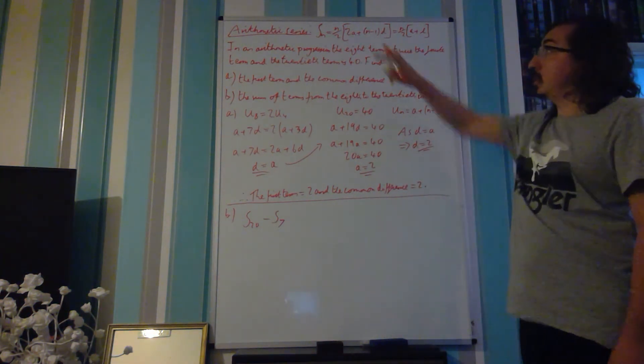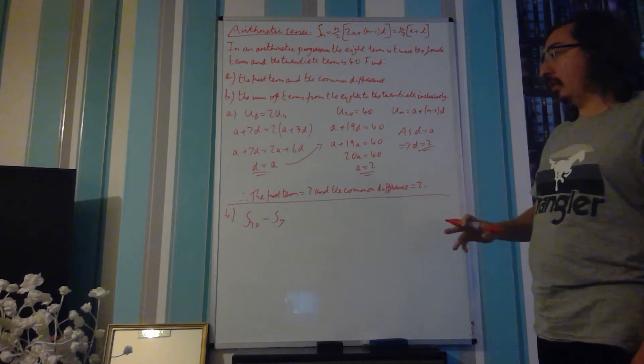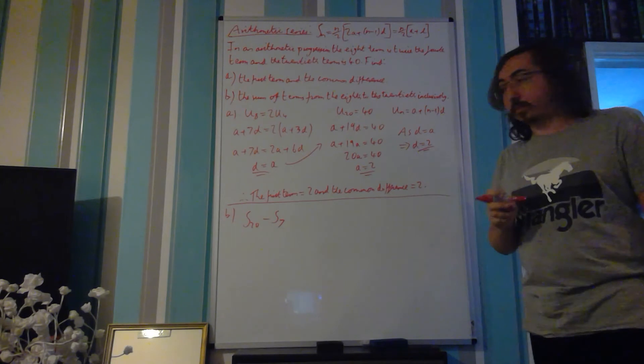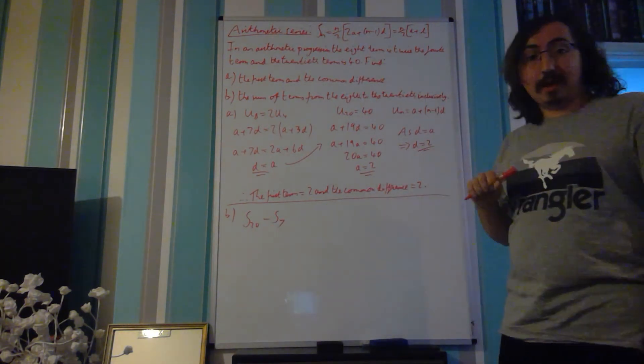So, in other words, we're going to use our summation formula twice. But in all instances, our A value and D value are both still 2. The only thing that's going to be different for each of these is our N value.